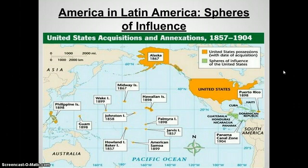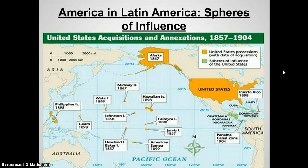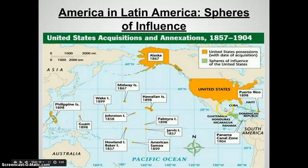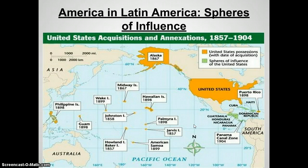In this last part, we're going to look at how the United States acted after the Spanish-American War under three presidents: Theodore Roosevelt, William Howard Taft, and Woodrow Wilson. These men will not gain territory like McKinley did with the Spanish-American War, but they will set up spheres of influence in Central and South America and really establish the relationships that will drive the United States and Central and South America in the decades to come.